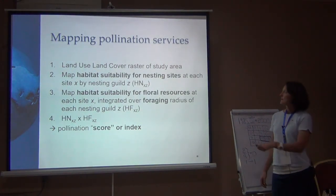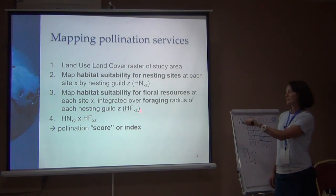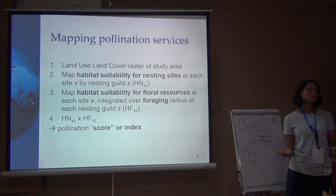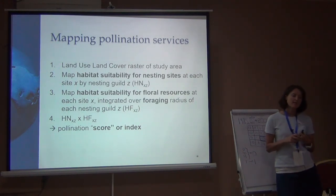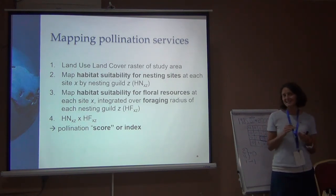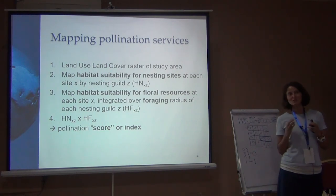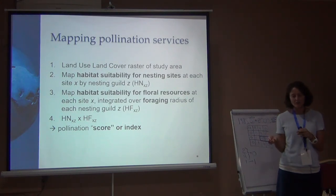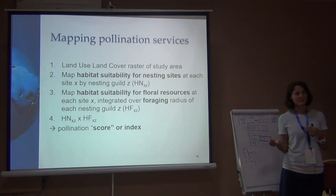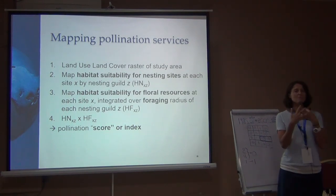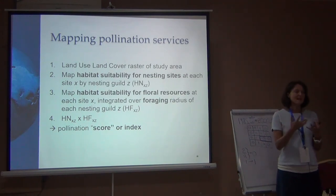The last step is basically just multiplying these together, so you get a score or an index from 0 to 1 about how strong you would expect the pollination service to be in that landscape. It's not technically pollination — pollination is a transfer of pollen within or between flowers — so what we're measuring is a proxy that approximates the pollination service, because we're essentially modeling bee abundance in this landscape.